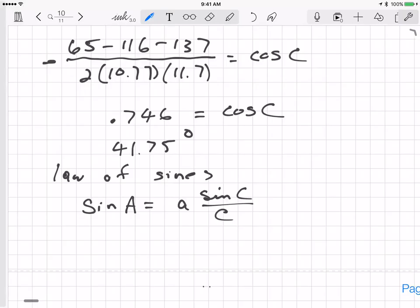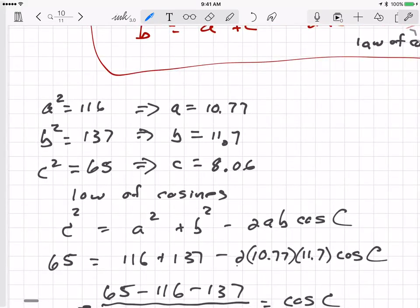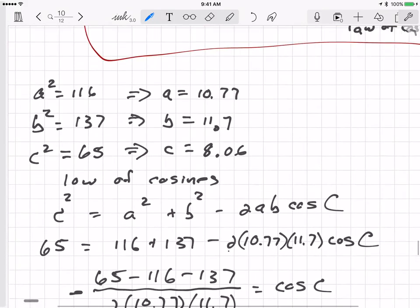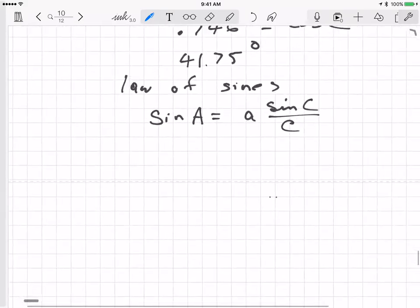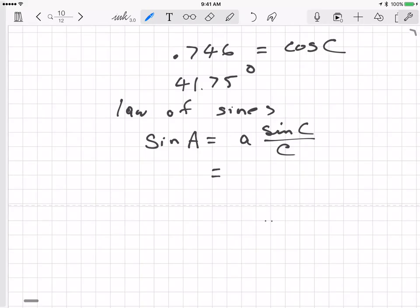So now I have my angle C is 41.75 degrees. So I can find the sine of that angle. Here it is right here. And let me do the sine of that angle. Sine of that angle is .01302. Let me divide by C. So I want to input C. C is 8.06, 8.06 divide. So I divide by C and then multiply by A. And A is, C is 8.06, A is 10.77. So multiply by A, 10.77 multiply.